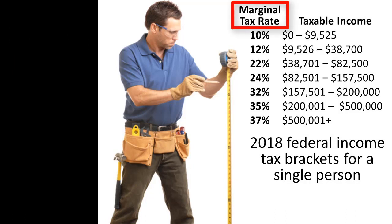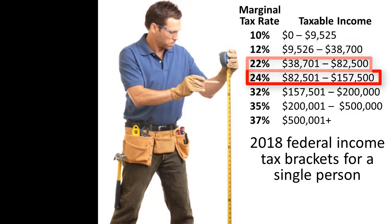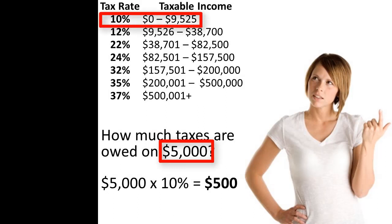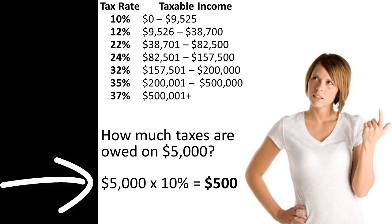A marginal tax rate refers to the rate charged on the last dollar of earned income. Calculating taxes owed is not as simple as finding the marginal tax rate and multiplying it by the taxpayer's taxable income. Instead, each separate level of income is taxed at the rate indicated in the tax table. At the lowest level of taxable income, calculations only require using one rate. For example, a single taxpayer with $5,000 of taxable income in 2018 would pay taxes at the 10% rate for all of his or her taxable income. This taxpayer would owe $500 in taxes, that is $5,000 times 10%.